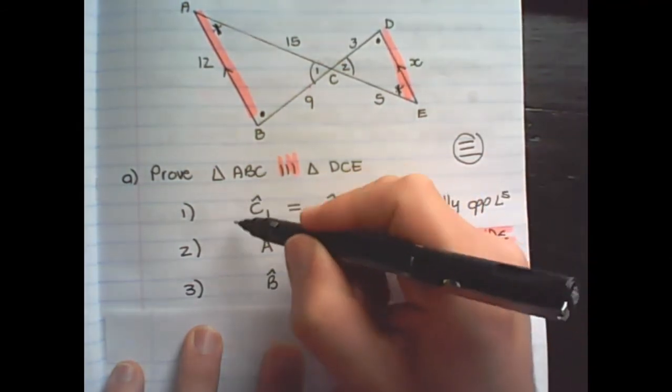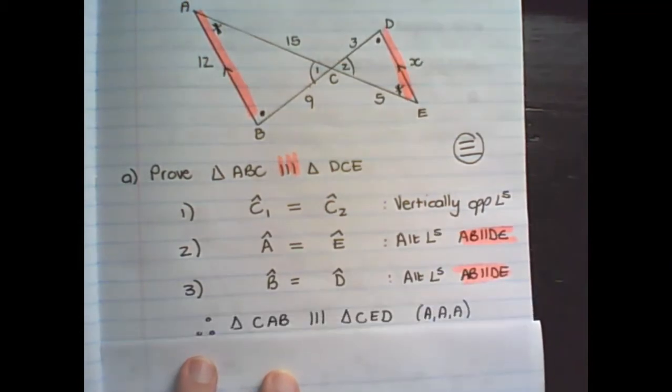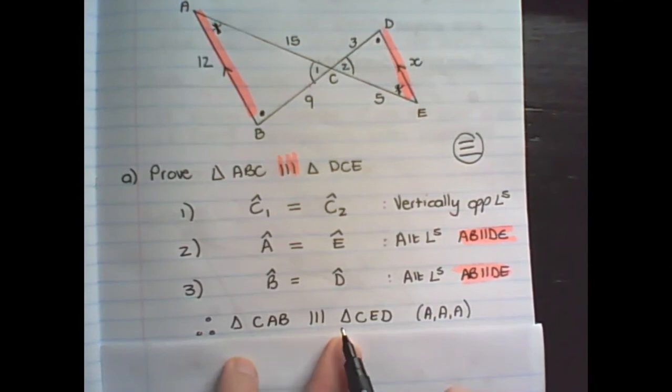Now we have proven three sets of angles equal to each other. Therefore triangle CAB is similar to triangle CED. Angle, Angle, Angle.